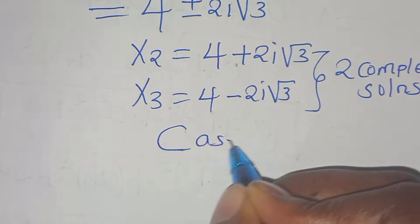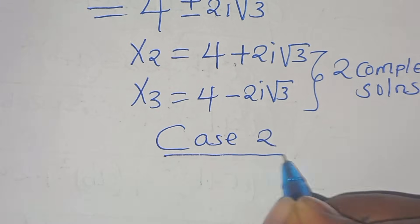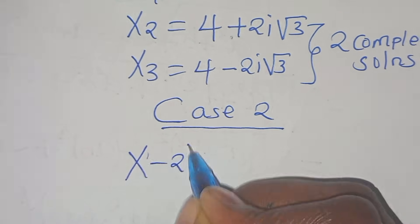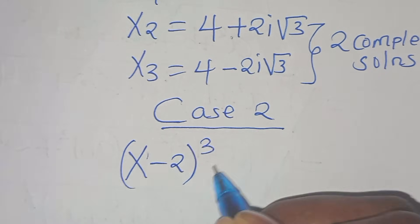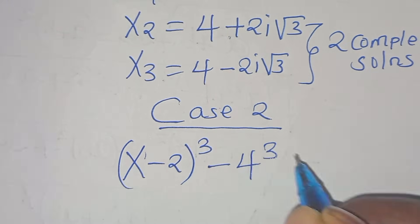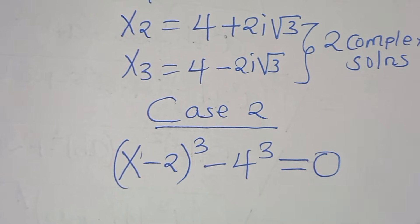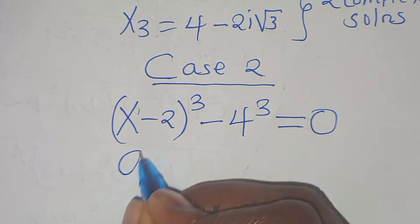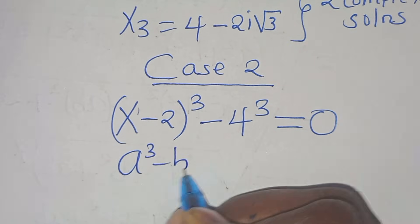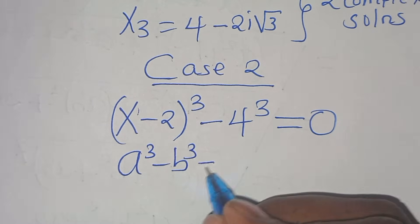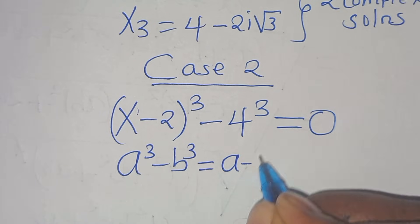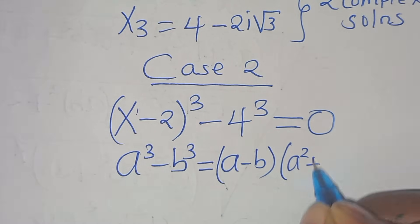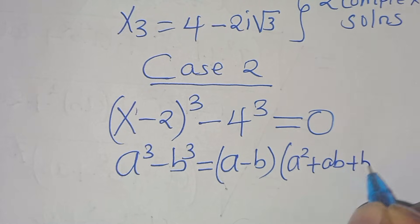So let's proceed to case 2. In case 2 we have x minus 2 raised to the power of 3 subtract 4 to the power of 3, which equals 0. This equation is in the form of a to the power of 3 minus b to the power of 3 — the difference of two cubes — which we can express as a minus b, times a squared plus ab plus b squared.